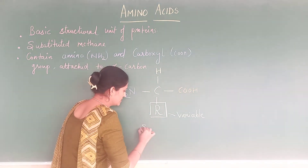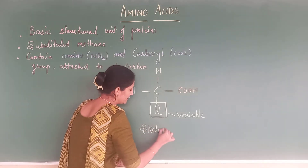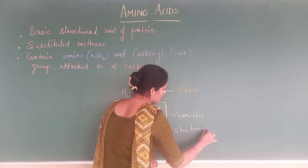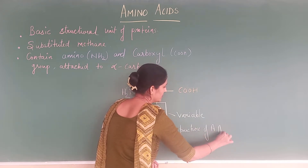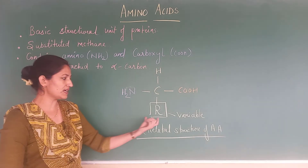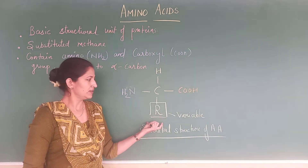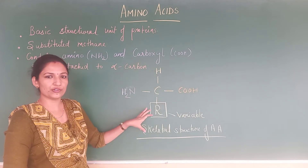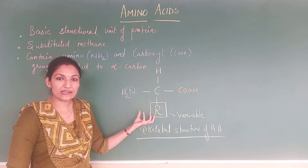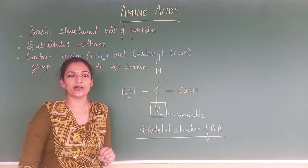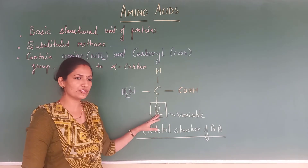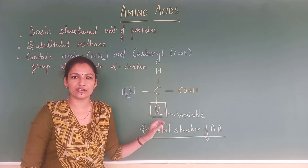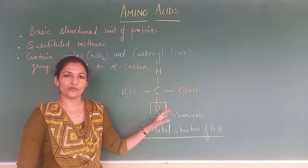This is the skeletal structure of amino acids. What we are going to change in different amino acids is R. So one amino group and one carboxyl group are going to be there in the structure of every amino acid. This is the basic structure. The R group, which is variable, is going to decide the type and nature of the amino acid.